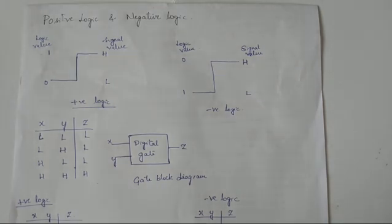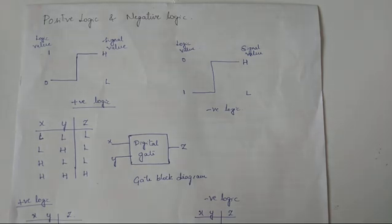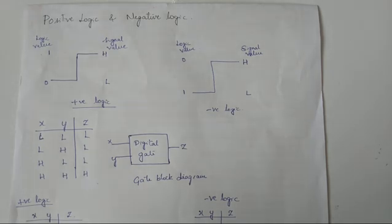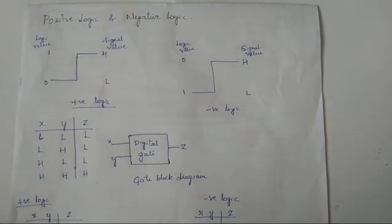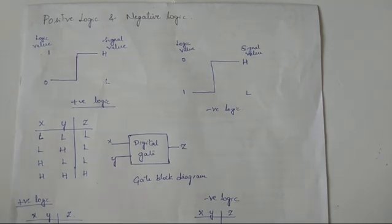Welcome to Vinuta's Math Channel. This is the 13th video of Module 1. In this video we are going to discuss the different types of logic, that is positive logic and negative logic. The inputs and outputs of any digital gate will be represented by either a 0 or 1.